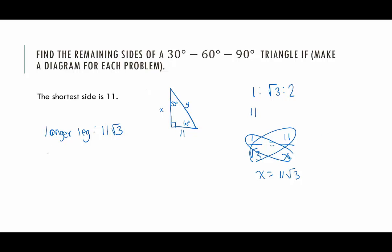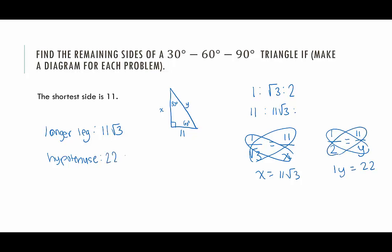Then I can do this again to figure out the length of the hypotenuse. I can set up a ratio again: the shortest side over the hypotenuse is equal to 1 over 2. The shortest side was 11 over the hypotenuse I called y. I cross multiply and get 1y equals 2 times 11, which is 22. So the hypotenuse is 22. That matches — we have 1, root 3, 2 and here we have 11, 11 root 3, and double 11.